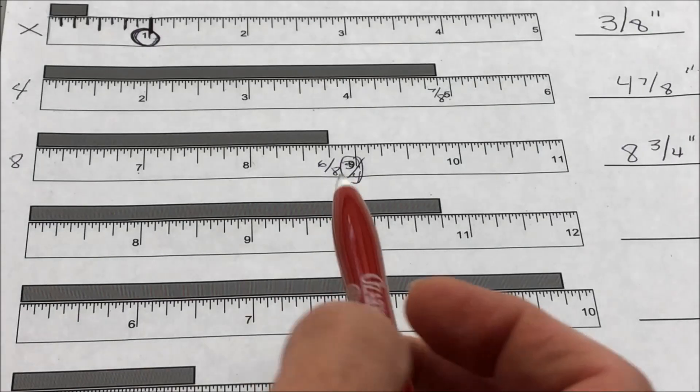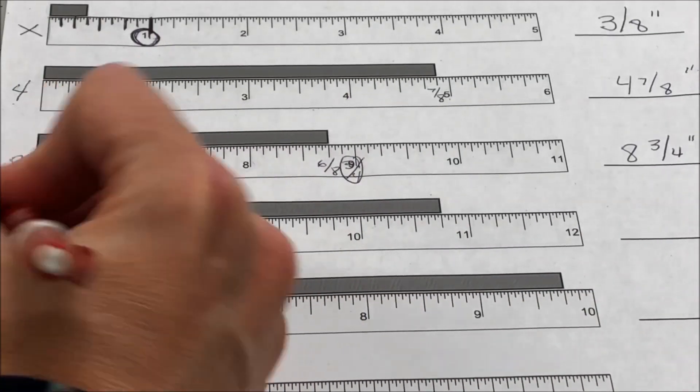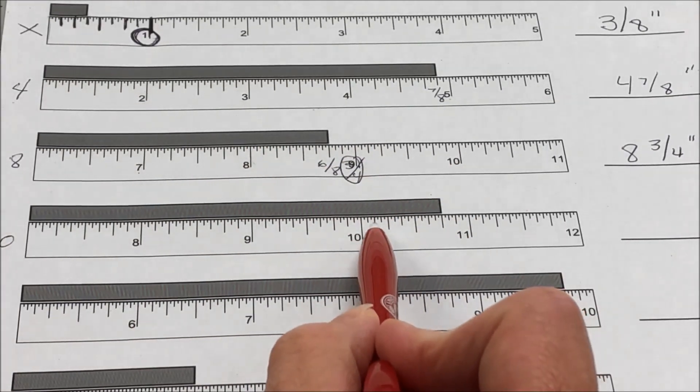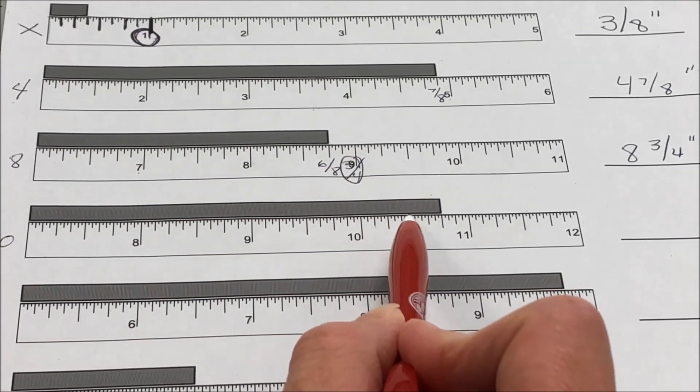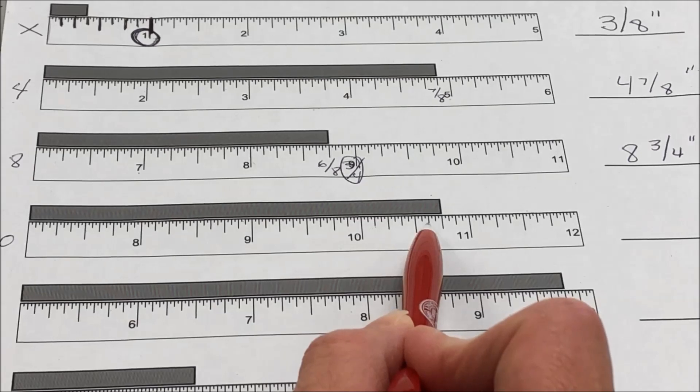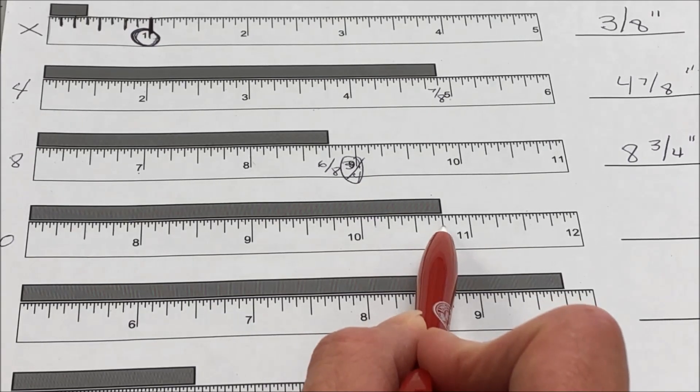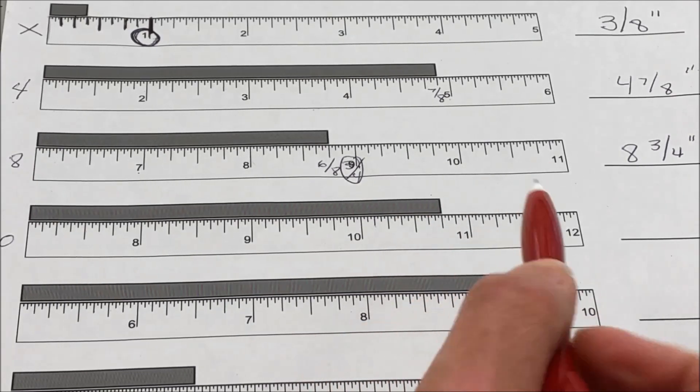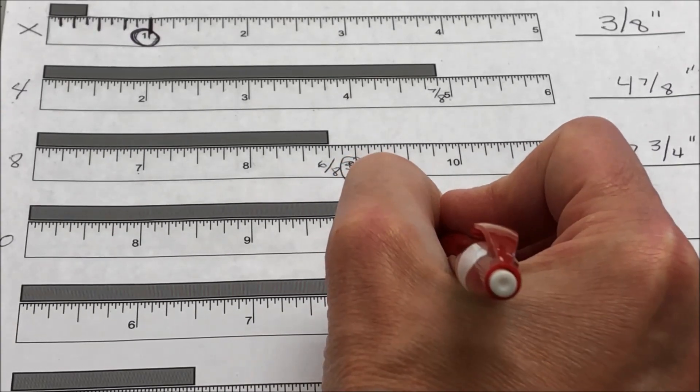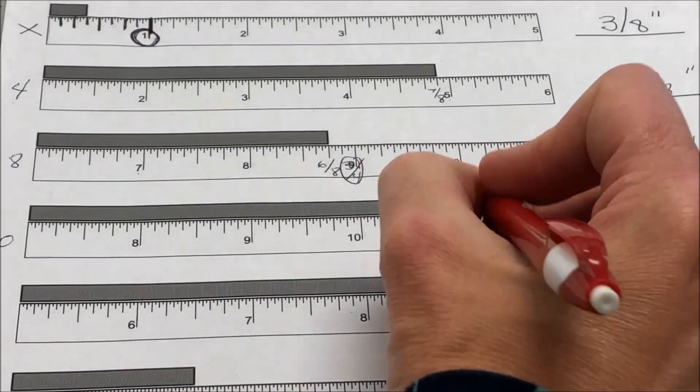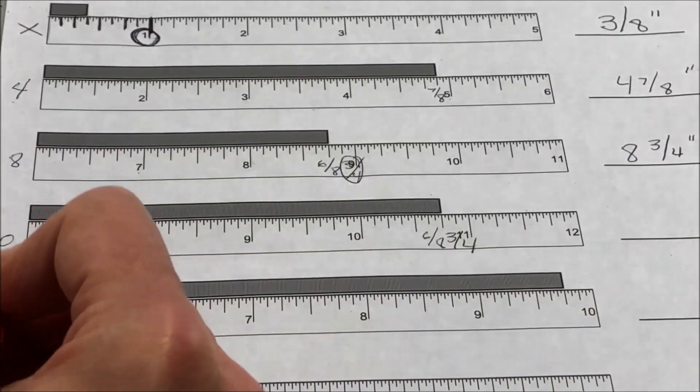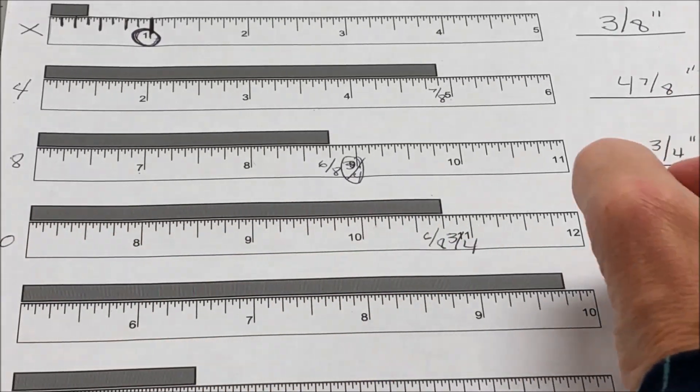All right. So for this one, this is going to be a 10. And we've got 1/8th, a quarter, 3/8ths, a half, 5/8ths. And then this one is 6/8ths again. Well, we know because we did that previous problem that 6/8ths is actually 3/4ths. So this is going to be 10 and 3/4 inches.